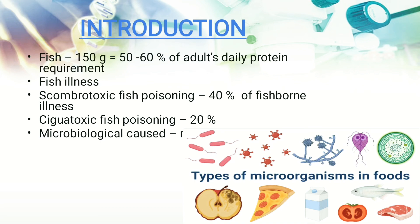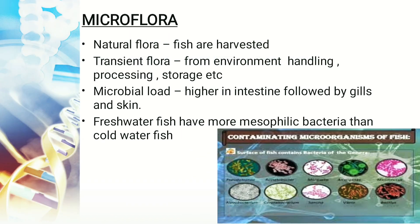150 grams of fish contains 50 to 60 percent of the adult's daily protein requirement. Fish illness can be because of scombrotoxic fish poisoning, ciguatoxic fish poisoning, or microbiological causes. 40 percent of fish-borne illness is due to scombrotoxic fish poisoning, 20 percent is due to ciguatoxic fish poisoning, and the remaining 40 percent is due to microbiological causes.